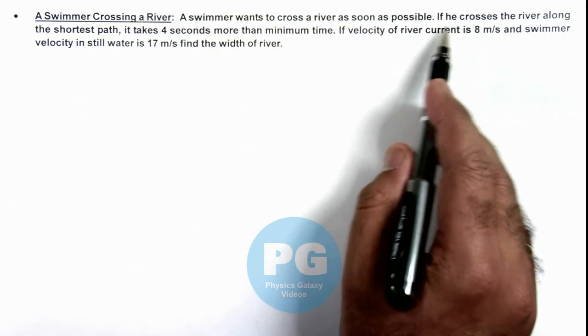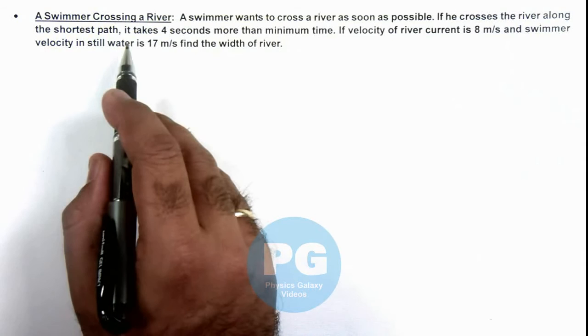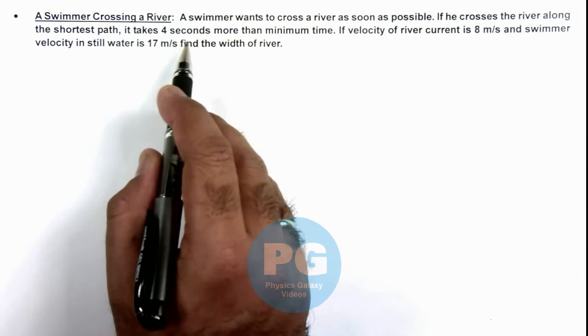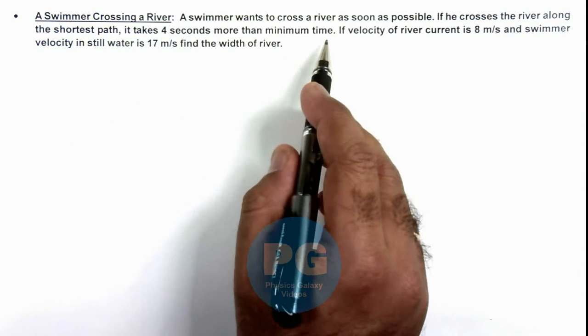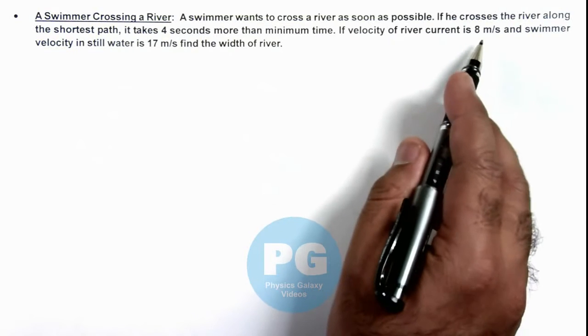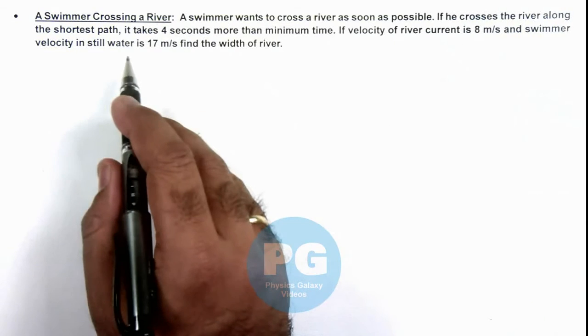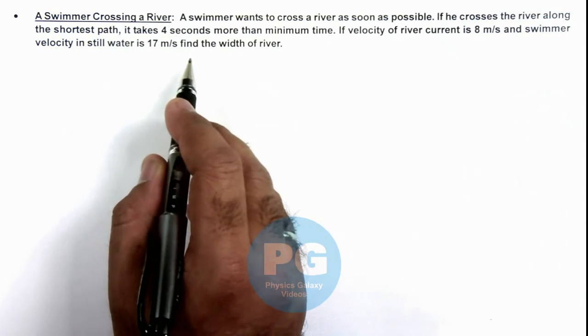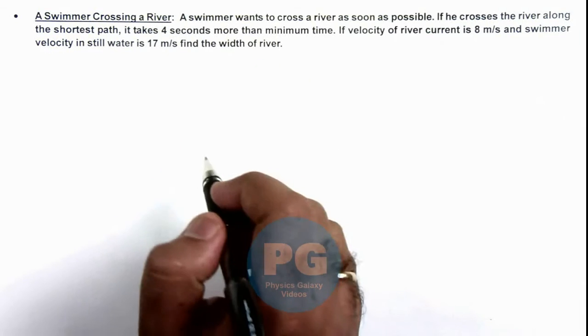And if he crosses the river along the shortest path, it takes 4 seconds more than the minimum time. If velocity of river current is 8 meters per second and swimmer velocity in still water is 17 meters per second, we are required to find the river width.